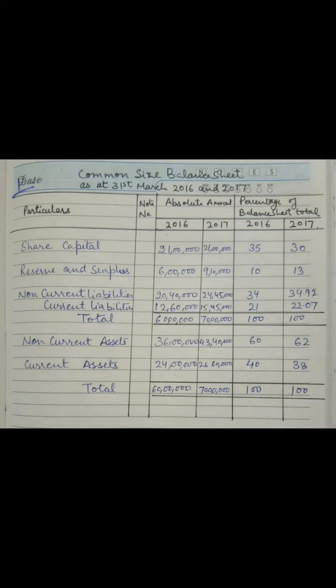For the asset total, 60 lakhs by 60 into 100 gives 100 percent, and for 2017, 70 lakhs upon 70 lakhs into 100 again gives 100 percent. With this our question is done. This is what we have to do to prepare a common size balance sheet. Thank you.